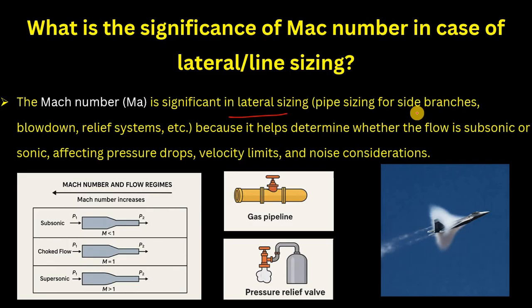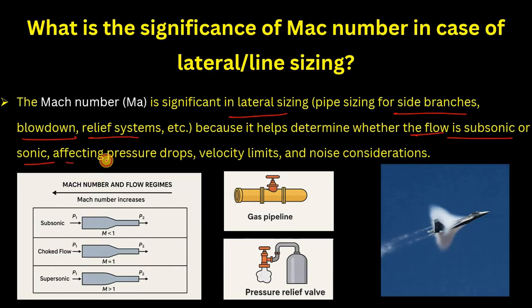The significance of Mach number in lateral or line sizing is that it tells us whether your flow is subsonic, sonic, or supersonic based on whether Mach number is less than, equal to, or greater than one. It affects pressure drops, velocity limits, and noise considerations — all very important during lateral sizing, because exceeding velocity or noise limits can lead to mechanical failure and an unstable design.